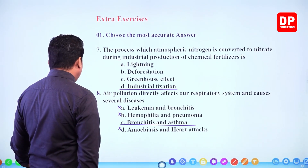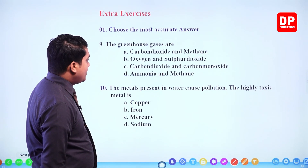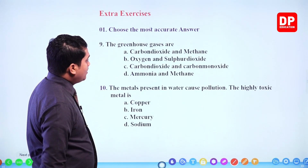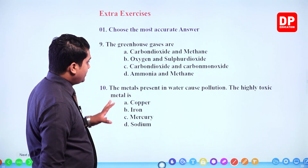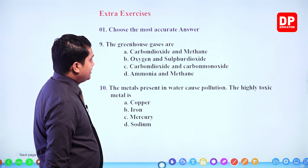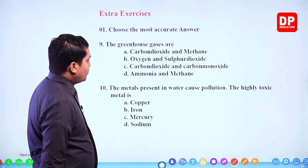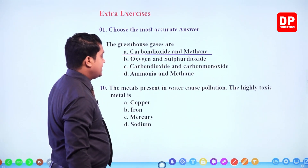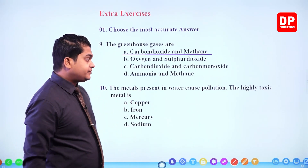Next one: the greenhouse gases are — (a) carbon dioxide and methane, (b) oxygen and sulfur dioxide, (c) carbon dioxide and carbon monoxide, (d) ammonia and methane. The two obvious greenhouse gases from these answers are carbon dioxide and methane. Oxygen is not one, carbon monoxide is not one, and ammonia is also not a greenhouse gas. So our answer should be carbon dioxide and methane.